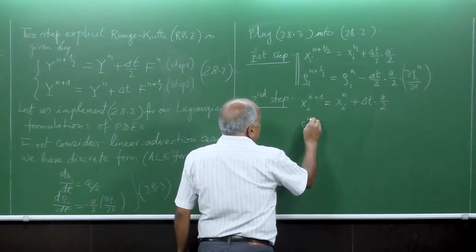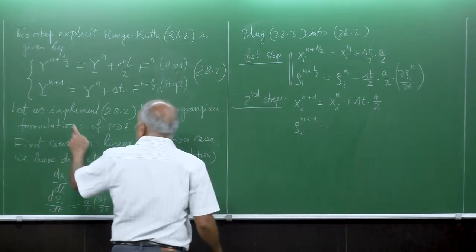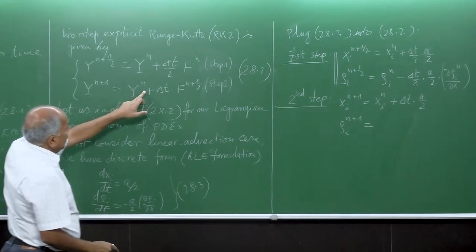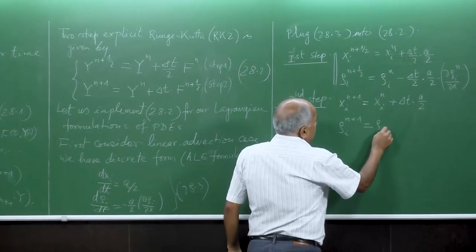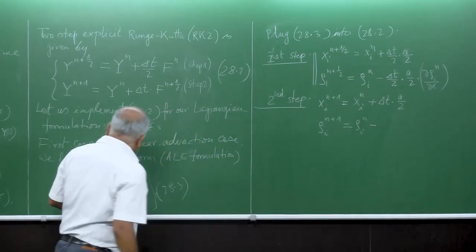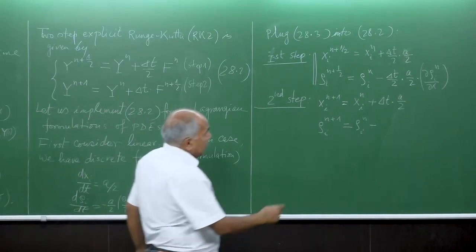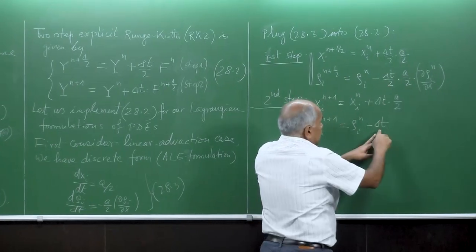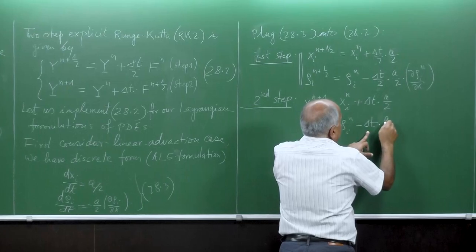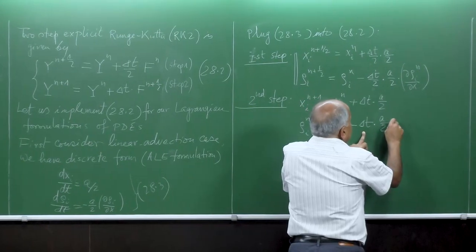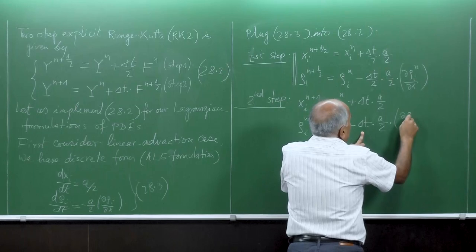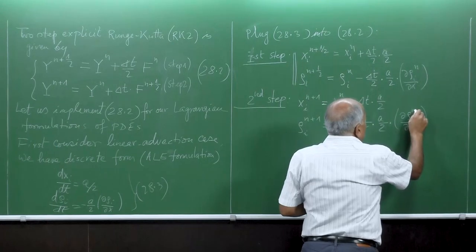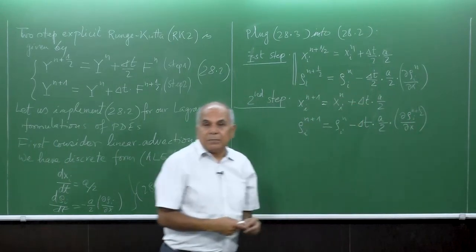For the second equation, rho_i^{n+1} = rho_i^n. The right-hand side is delta_t times a/2 times (del rho_i / del x), but it should be at time level n+1/2 — not time level n — at the half level.